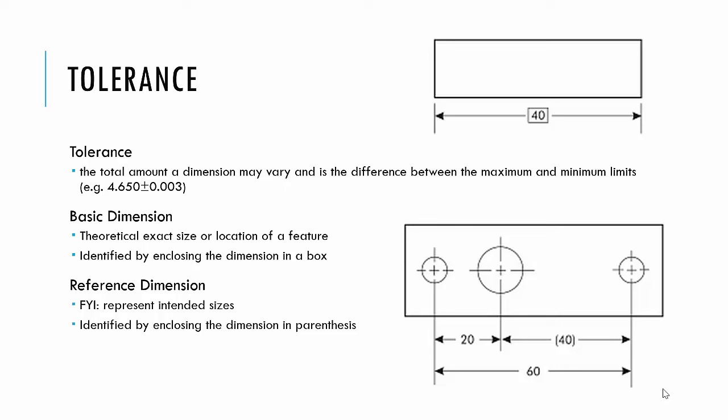A reference dimension is just for your information. It kind of represents intended sizes. It will not be used for inspection or the manufacturing process. So a reference dimension is kind of FYI, and it's going to be shown like the 40 in the lower right-hand side, for your information in parentheses. So it won't be used for manufacturing or specifications.